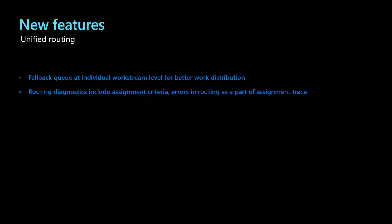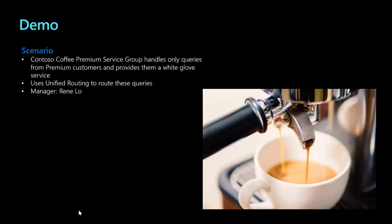We will see how a customer service manager can easily identify and close gaps in the performance of their organization. Renee is the customer service manager for a new group in Contoso Coffee that services premium customers. She comes with a wealth of experience in optimizing customer service setup. Renee's group is using Unified Routing to assign cases from premium customers to the agents.